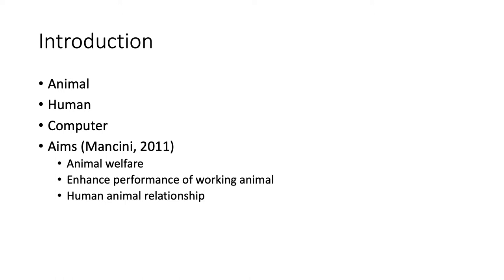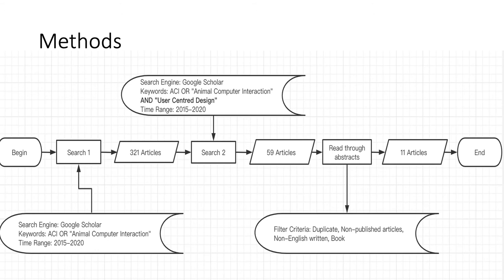Now, let's have a look at what is ACI. ACI is a field of research which studies the design and use of technology with animals. There are three aims of ACI: the first one is enhancing animal's quality of life and well-being; the second one is supporting animals in the functions assigned to them by humans; and the third one is supporting human-animal relationships.